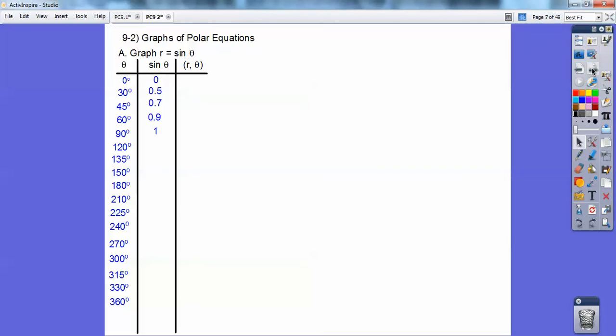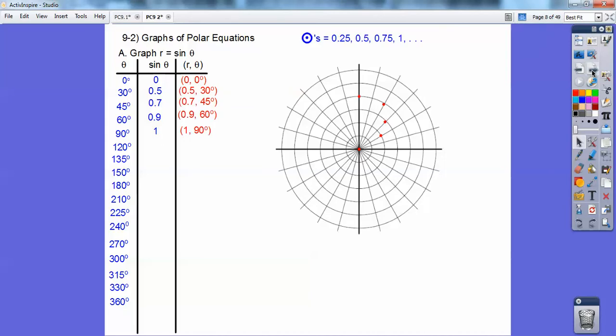So if I did the sine of 0 is 0, the sine of 30 is 0.5, the sine of 45—and make sure your calculator is in degrees mode, because these are all degrees—and the sine of 60 is 0.9 and so on. So this is my r right here, because r equals the sine of theta, and this is my theta right here. So this would be 0, 0. This would be 0.5, 30, and so on.